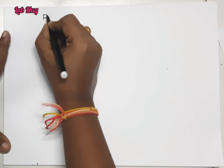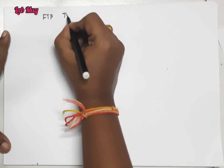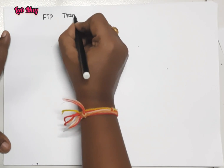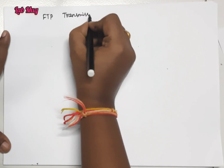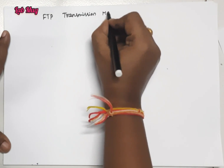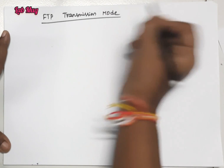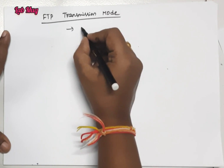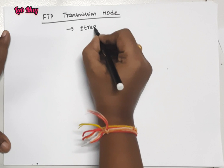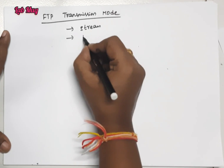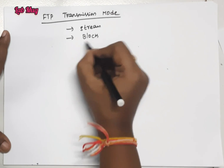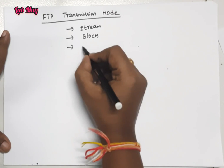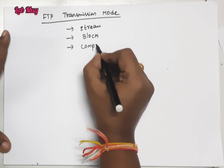FTP transmission modes. In FTP, there are total three transmission modes. That is: stream mode, block mode, and compressed mode.